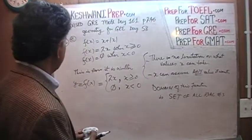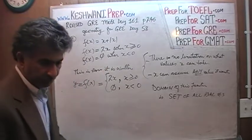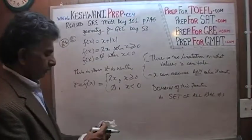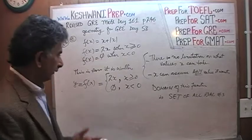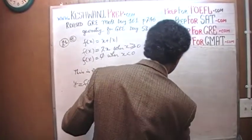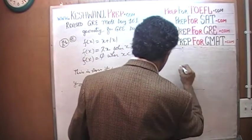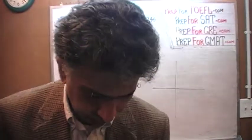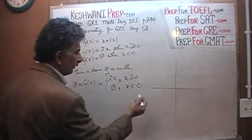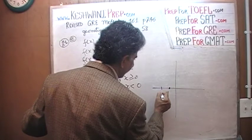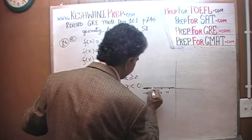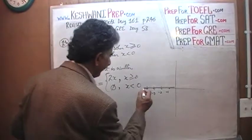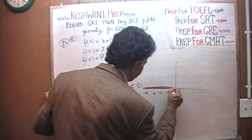Let's plot this function and see what the shape looks like. As far as the domain is concerned, there are no restrictions — x can be positive, negative, 0, or a fraction. When x is negative, y is 0. So when x is negative 1, y is 0; when x is negative 2, y is 0; when x is negative 3, y is 0; and so on. This is the portion that concerns us here: when x is negative, the graph just sits right on the x-axis because y is 0.